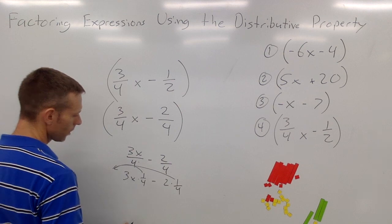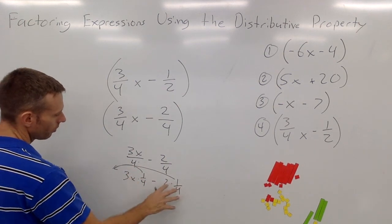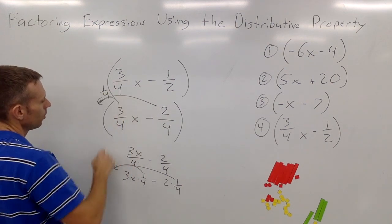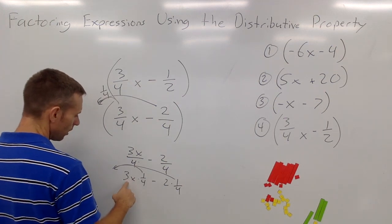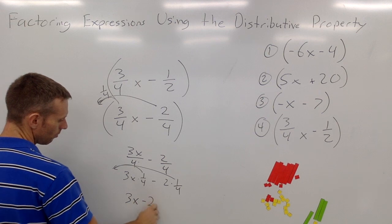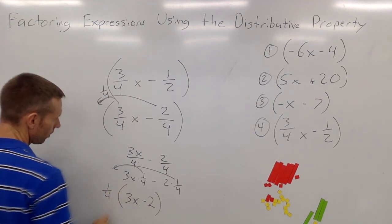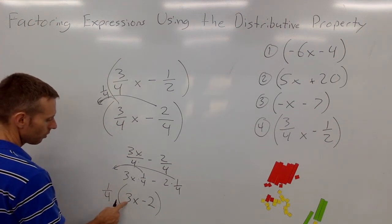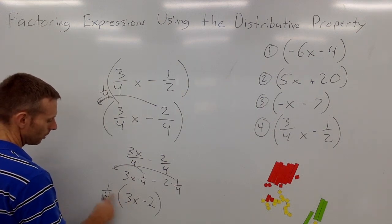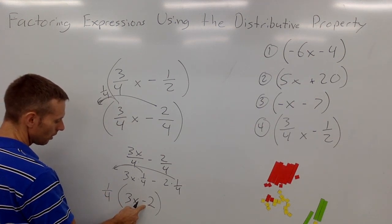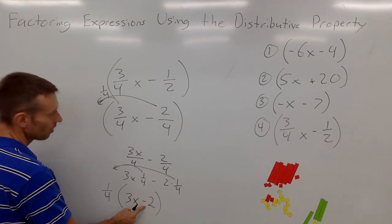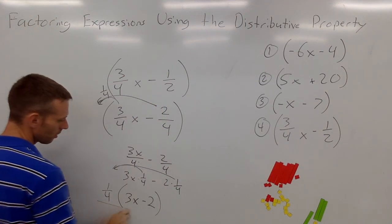The more you do this, the more you won't have to go through all of these steps — you'll just be able to see it. So when I factor out that one-fourth, I'm left with 3x minus 2, and the one-fourth on the outside. Let's check: one-fourth times 3x is three-fourths x, or 3x over 4. One-fourth times negative 2 is going to be negative two-fourths, which is the same as negative one-half.